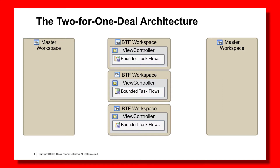The master workspace, or composite workspace, is the application that brings all the BTF workspaces together and makes use of the common workspace. Ultimately, the master workspace is the orchestrator — it contains the unbounded task flow and is the real application. In the two-for-one deal architecture, the first master workspace is dependent on the first bounded task flow workspace, consuming it through an ADF library JAR.